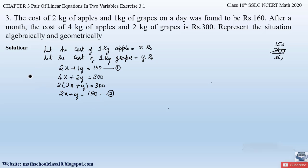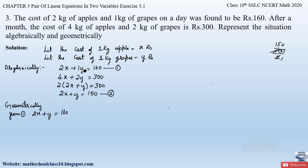This is how we have represented the situation algebraically. Now let us represent the situation geometrically. For that, let us consider equation number 1, that is 2x + y = 160. Finding the value of y by sending 2x to the right hand side, we get y = 160 - 2x.